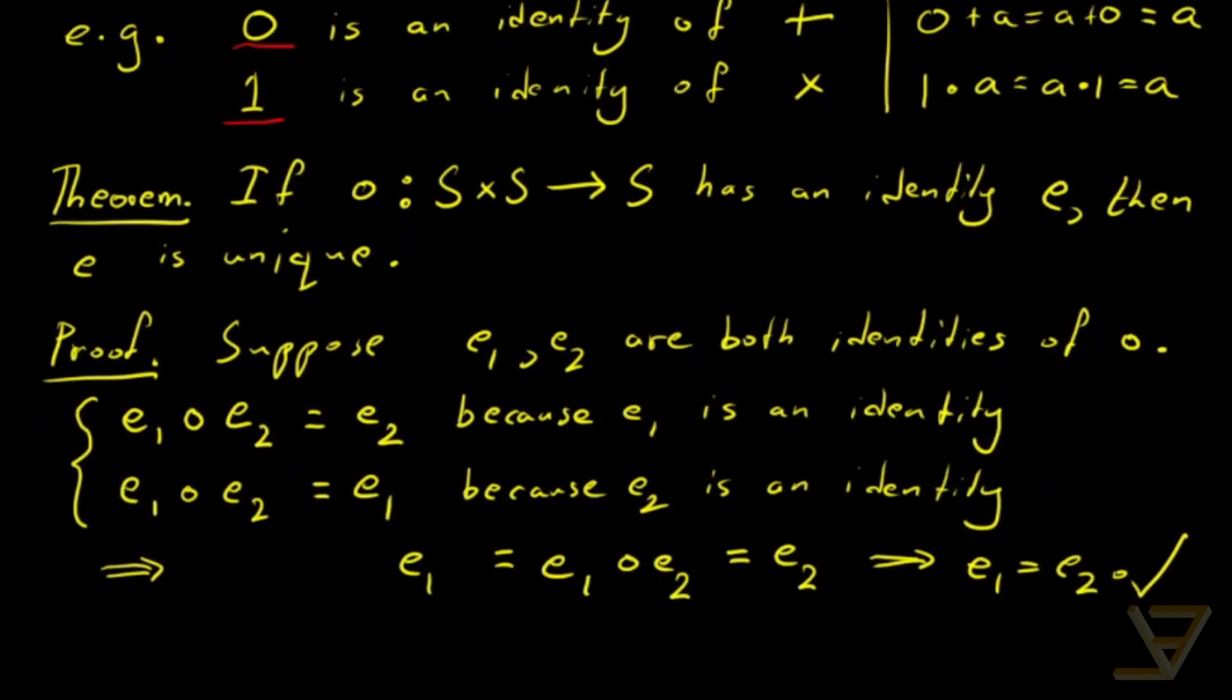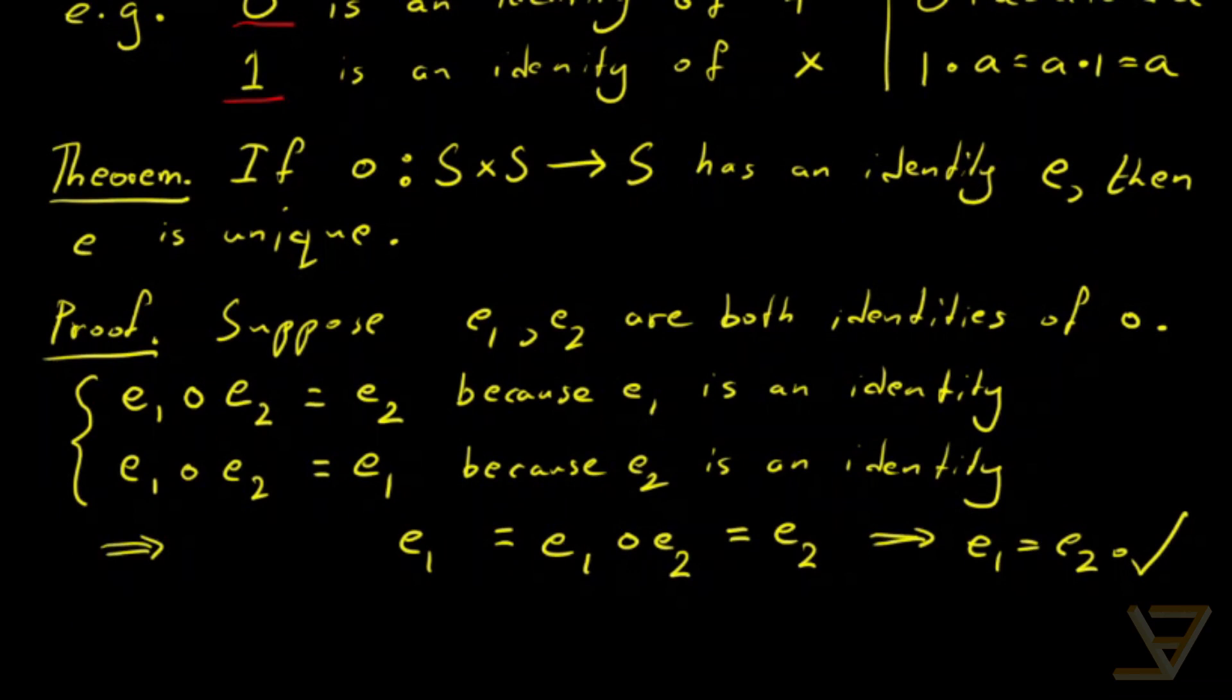And we gave the example of 0 in the case of addition and 1 in the case of multiplication. And then finally, we got to our theorem, which is that identities are unique. And we proved this by considering this expression and evaluating it in one way and another way. And this showed that if there are two identities, they are the same element of S.